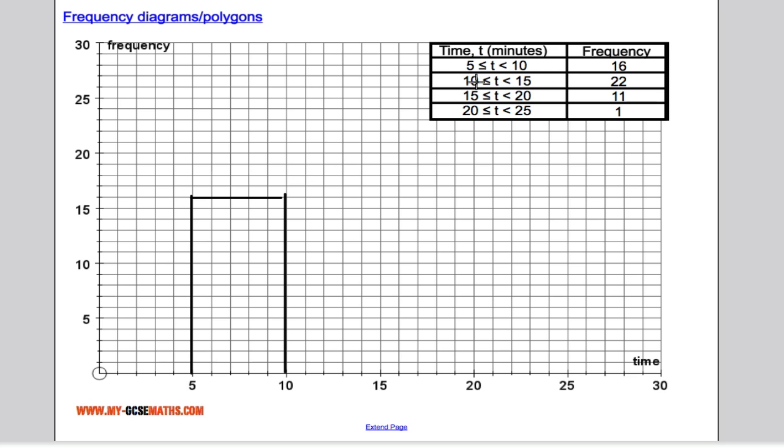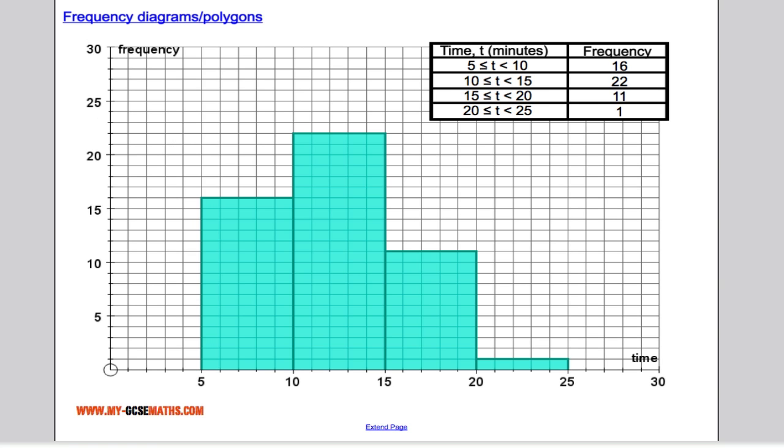Next bar is going to be between 10 and 15 and go up as far as 22. And so on through the data that we're given. When you've drawn in all your bars you should have something like this. That's all there is to it. That's how you draw a frequency diagram.